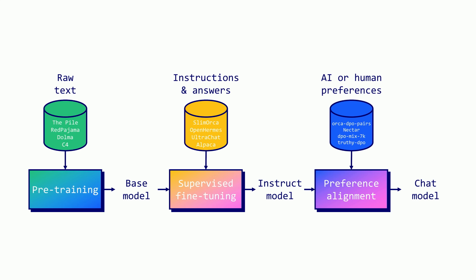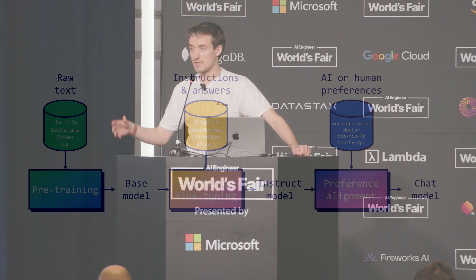This base model is really nice, but if you ask it questions or instructions, it's going to auto-complete your question instead of answering it. That's why we have the supervised fine-tuning stage, where this time we give pairs of questions and answers to the model. We have a similar training objective, but the idea is that at the end of it, it's going to actually answer your questions and follow your instructions.